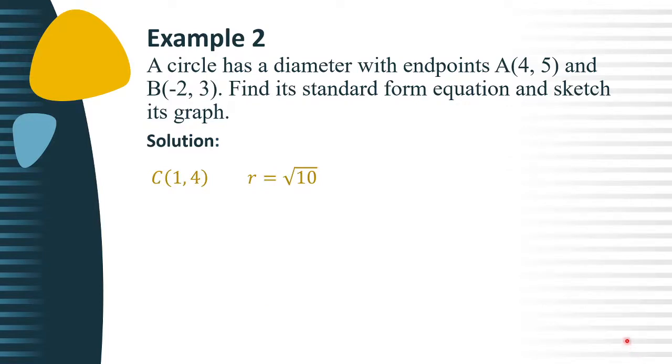Since the circle has its center at (h, k), which is (1, 4), we can use the equation (x - h)² + (y - k)² = r². From the given problem, we identified the values of h, k, and r as 1, 4, and square root of 10, respectively.